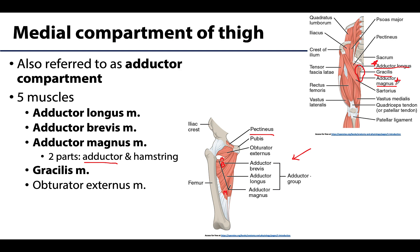Another muscle I find on the easier side to identify is the gracilis muscle, as it is relatively superficial and it is the most medial muscle in this compartment. You can see a bit of it right here - it will continue down all the way to the tibia and just looks like a long strap running along the medial border.